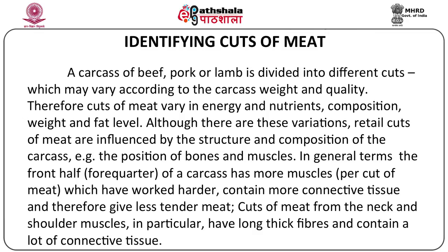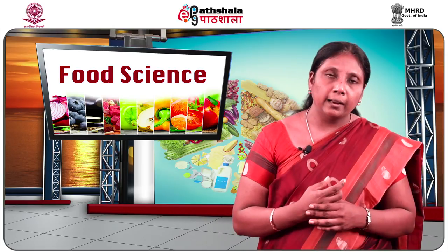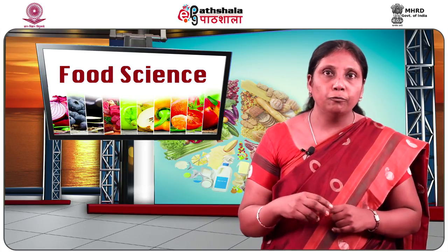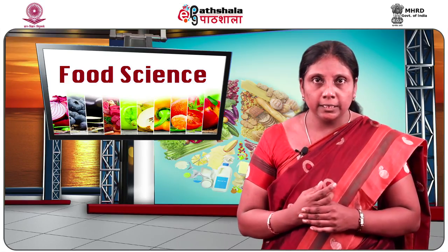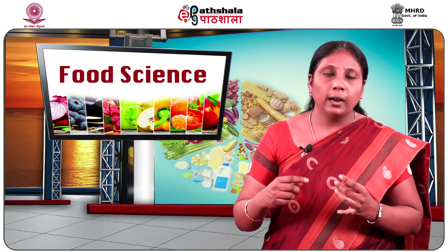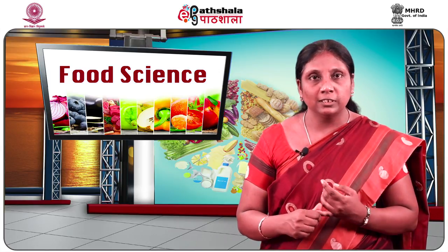The position of the bones and muscles helps in dividing the meat into different cuts. In general terms, the front half of the carcass — the forequarter — has more muscles per cut but they are worked harder, so they contain more connective tissue and therefore give less tender cuts. Cuts from the neck and shoulder muscles in particular have long, thick fibres and a lot of connective tissue. Whereas the meat from the back half — the hind quarters — contains fewer, less-worked muscles, so they have less connective tissue and produce the most tender cuts.